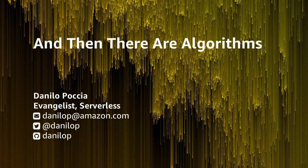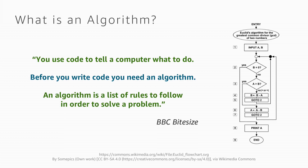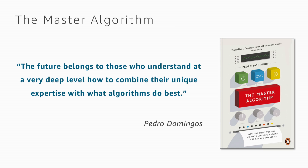Data is really useful if you can understand it and get actionable information from it — and that's where algorithms are important. I love this definition from the BBC Bitesize website, an online training resource for young kids: use code to tell a computer what to do. Before you write code, you need an algorithm — a list of rules to apply to solve a problem.